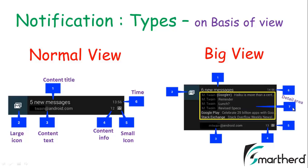The seventh component is the detail area, which is only present in the case of big view. This detail area can be further categorized into a detail text area, a detail picture area, or a detail inbox text area. Below the detail area at the bottom is the summarization of notifications — the content info showing how many notifications are summarized together that belong to the same activity.